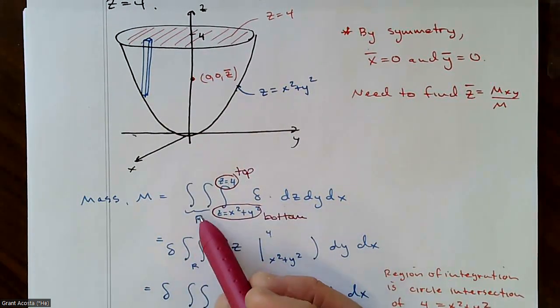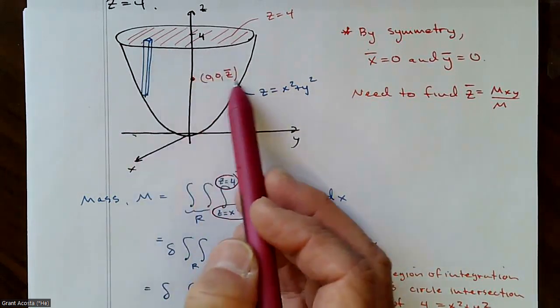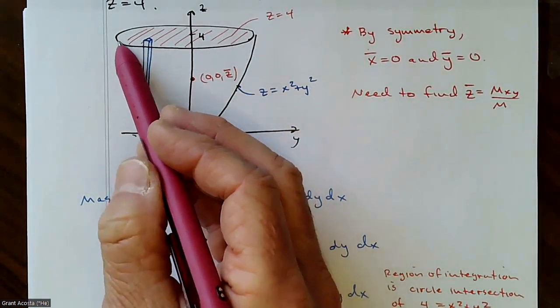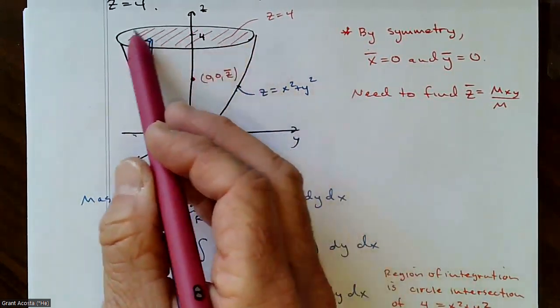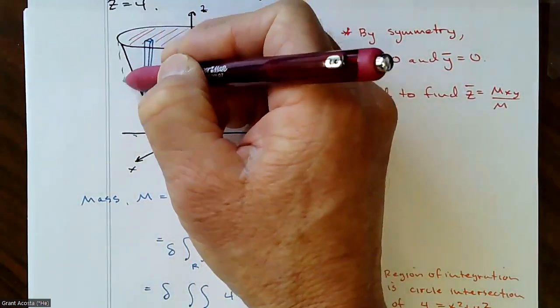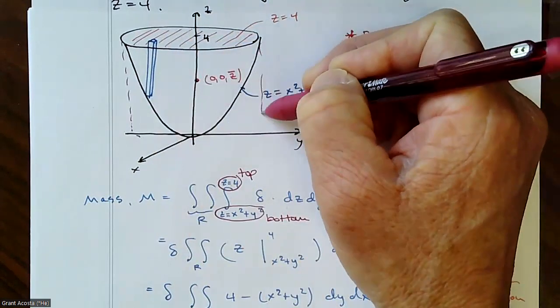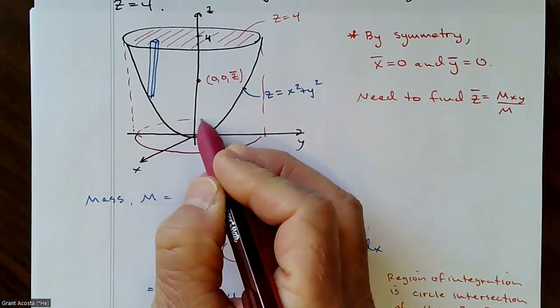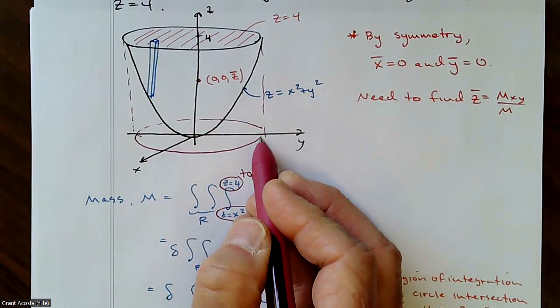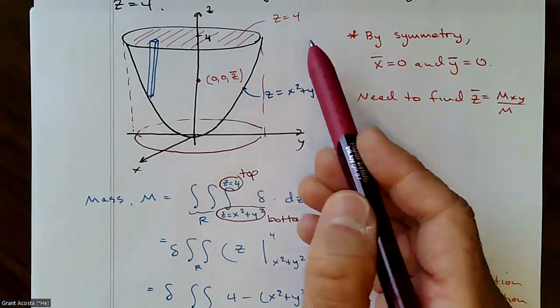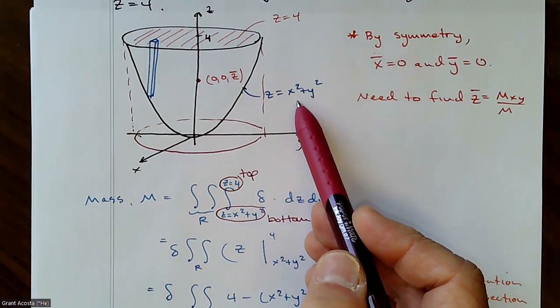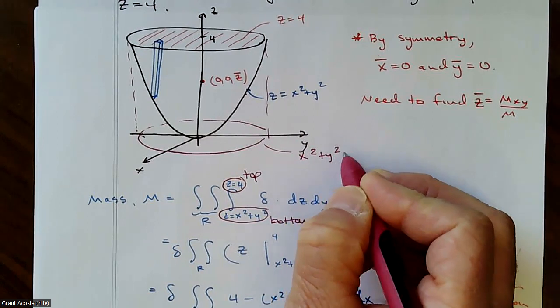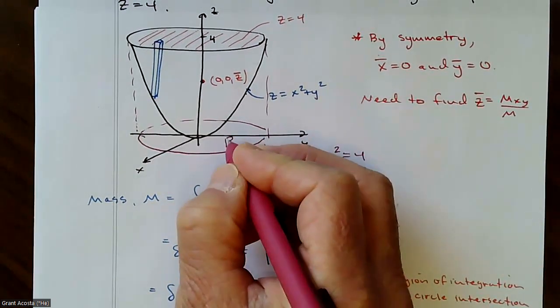And then I want to integrate that over R. Now, what is R in this case? R is where do all these columns lie in terms of x and y? Well, you can hopefully see that they're all going to lie within this top circle. So if I kind of imagine bringing that down into the xy plane, that's just going to be this circle, which is the intersection of z equals four and z equals x squared plus y squared. So that's going to be the circle x squared plus y squared equals four. That's my region of integration.